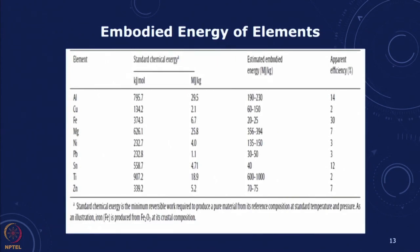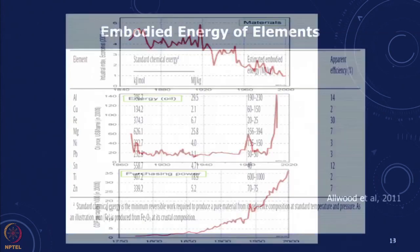When we talk about embodied energy and do life cycle analysis, we can look at different types of elements and see what energy is embodied and what efficiency is there. In general, as demand increases and we are looking at a finite stock for most materials, there are possibilities of substitutes, and with technology improvement it is possible to use less of a given material.